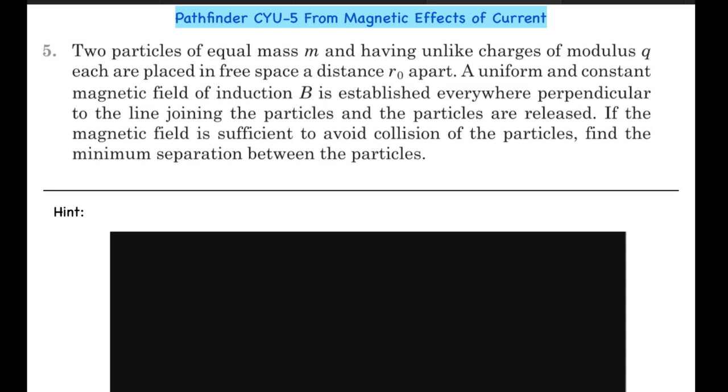Each are placed in free space at a distance r naught apart. A uniform and constant magnetic field of induction B is established everywhere perpendicular to the line joining the particles, and the particles are released. If the magnetic field is sufficient to avoid collision of the particles, find the minimum separation between these particles.